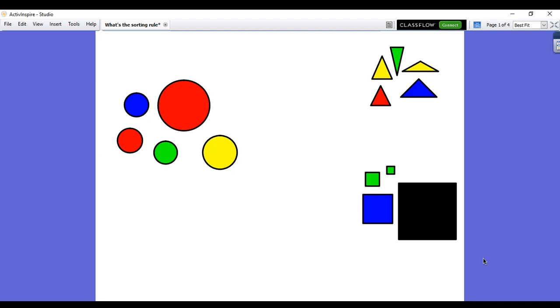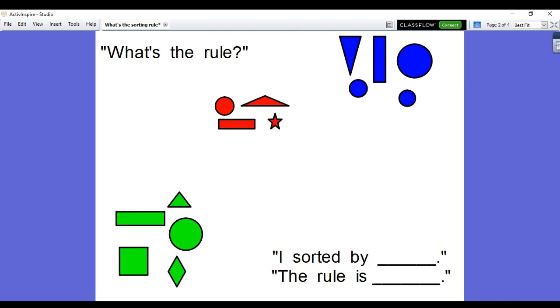So you were right. I sorted these sets of objects by their shape. Let's look at another set. Can you think of how I sorted these shapes?